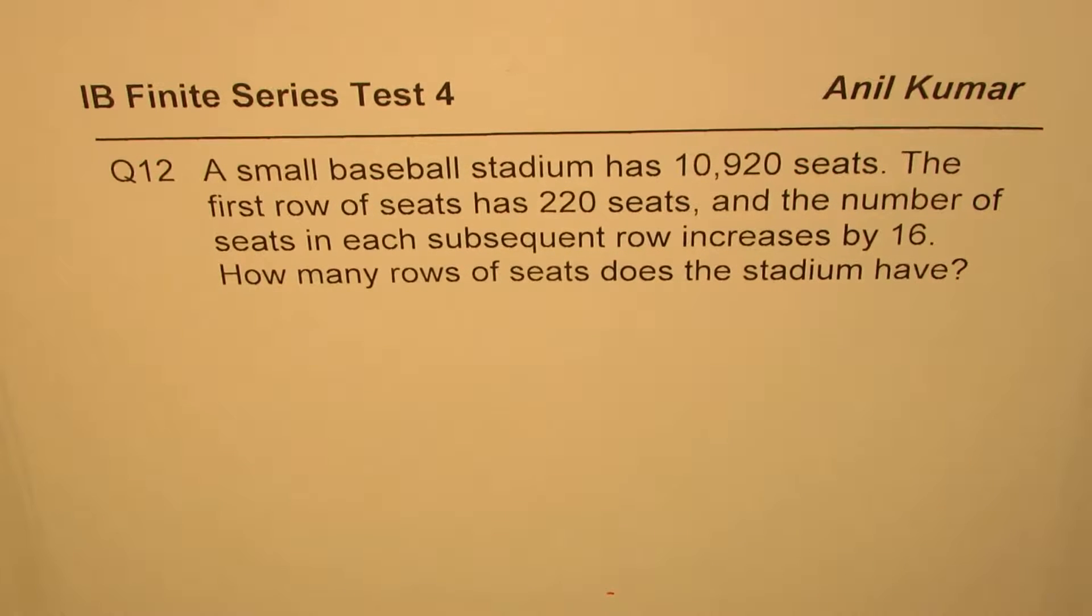A small baseball stadium has 10,920 seats. The first row of seats has 220 seats and the number of seats in each subsequent row increases by 16. How many rows of seats does the stadium have?